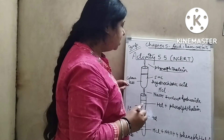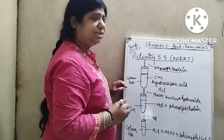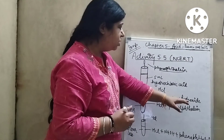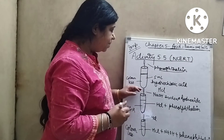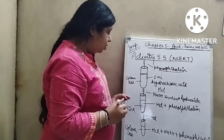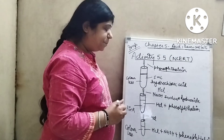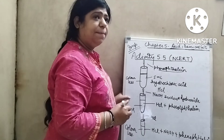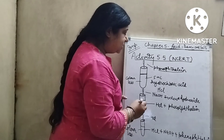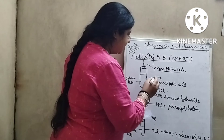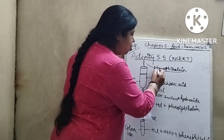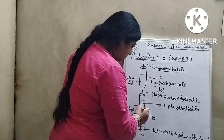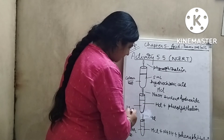What you will see is that the solution is colorless. Now add NaOH, that is sodium hydroxide — a few drops of it — and you will see a pink solution. What does it mean? In acidic conditions, phenolphthalein shows colorless. In basic conditions, phenolphthalein shows pink color.